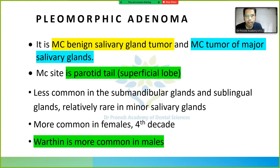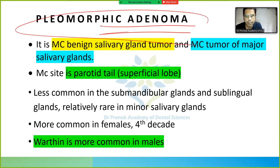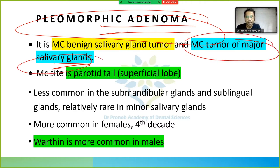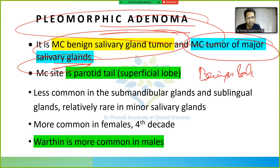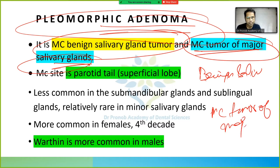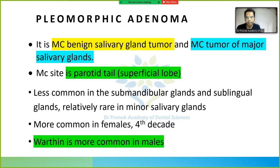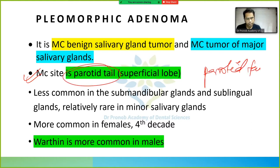Now discussing pleomorphic adenoma — it is a benign salivary gland tumor and the most common tumor of the major salivary glands. This question has appeared repeatedly in 2018 and 2019 exams. The most common site is the parotid tail.